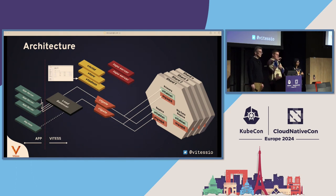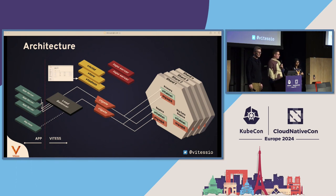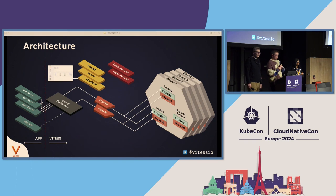VTGate is the most user-facing component. It connects to your application using gRPC or the SQL protocol. It receives a query, parses and interprets it, and then sends it down to the proper shard and keyspace. In yellow, we have the control plane: VTGLD is the CLI tool to administrate VITES, VTORC is the orchestration tool that detects and repairs failures in the cluster, and VTAdmin is the administration UI of VITES.